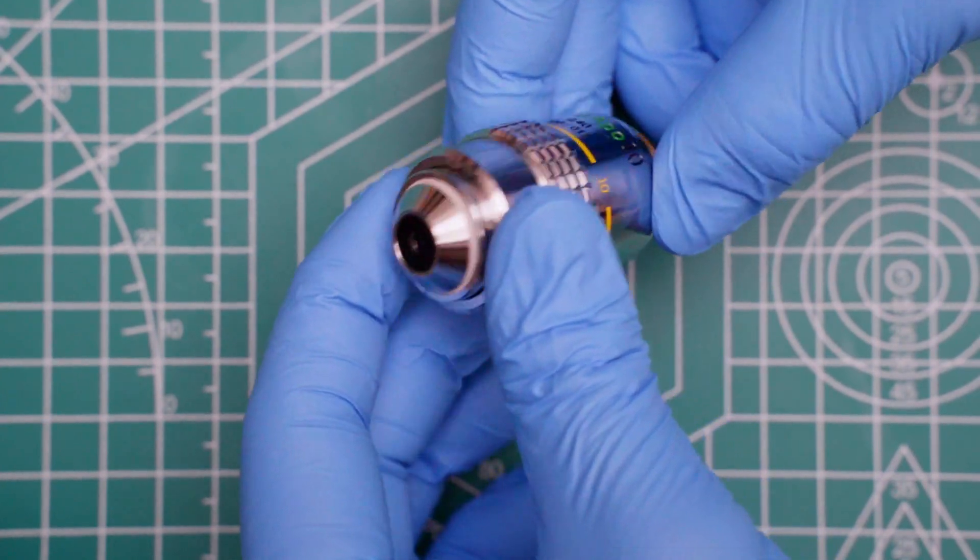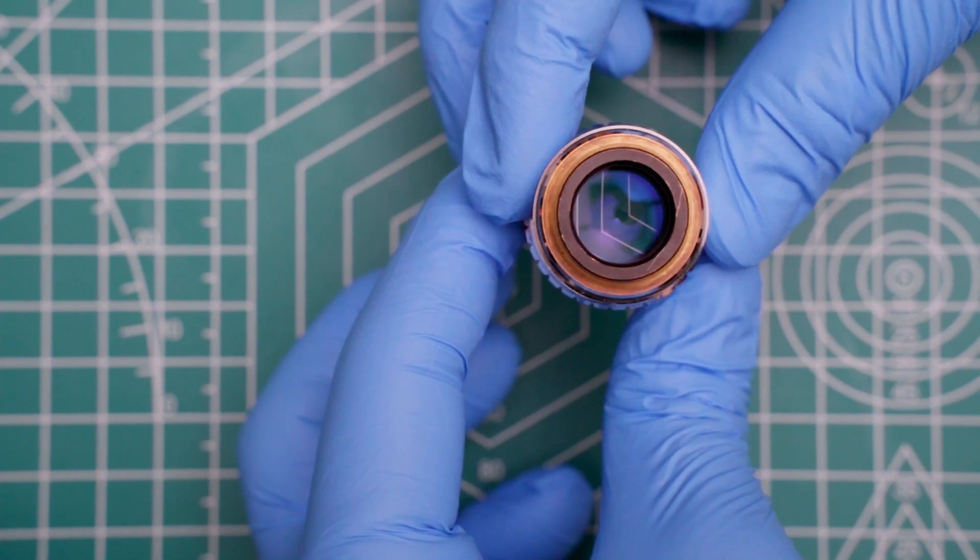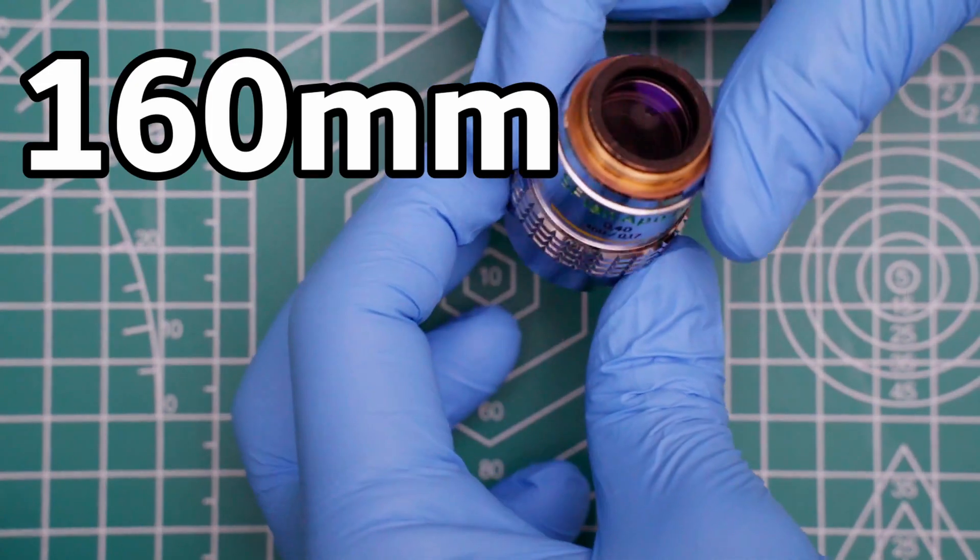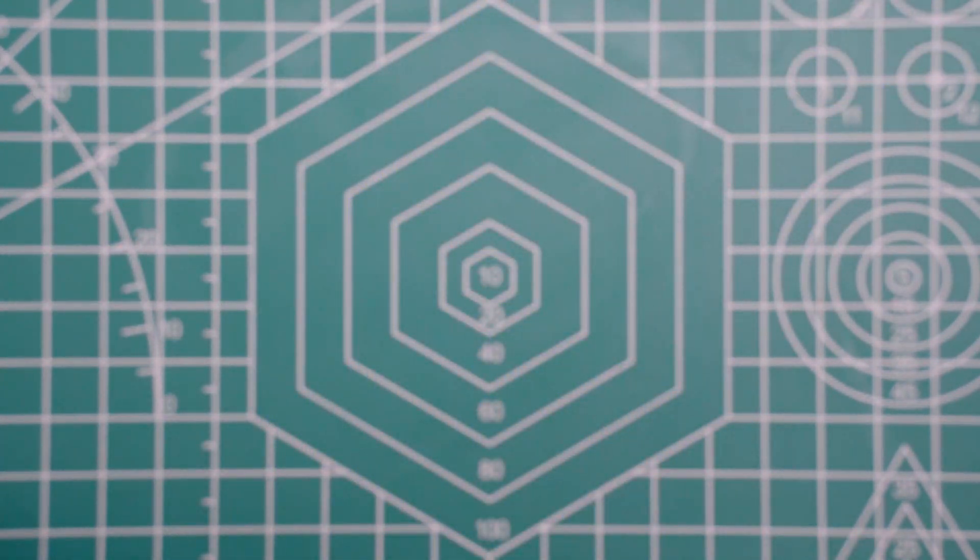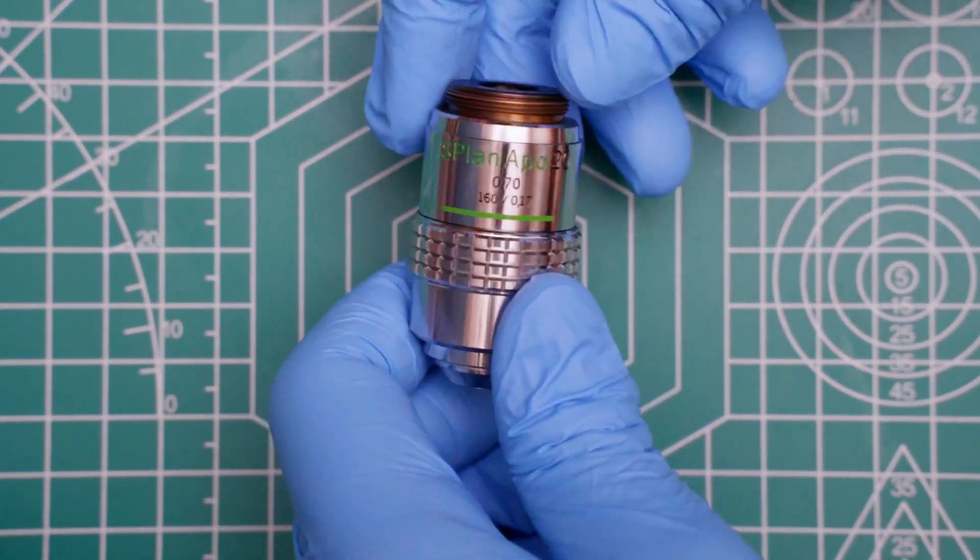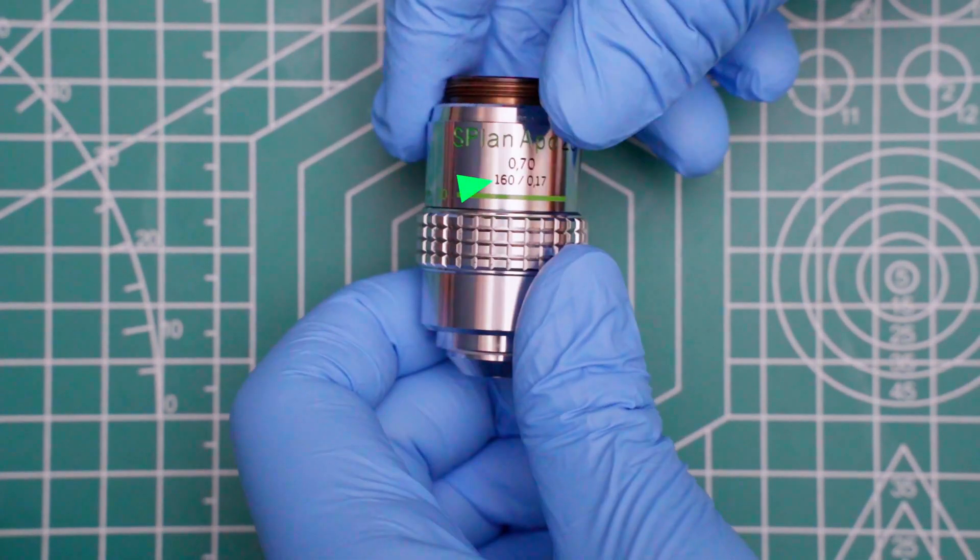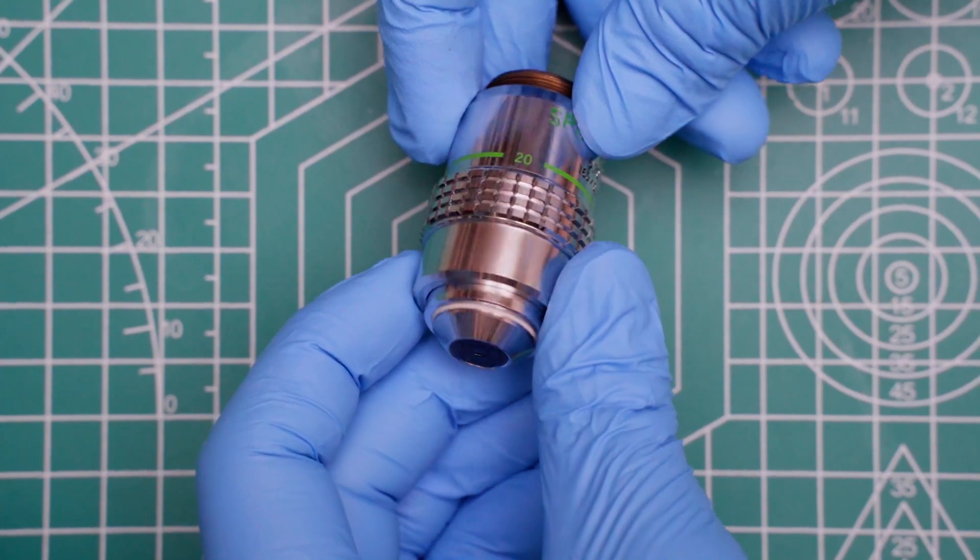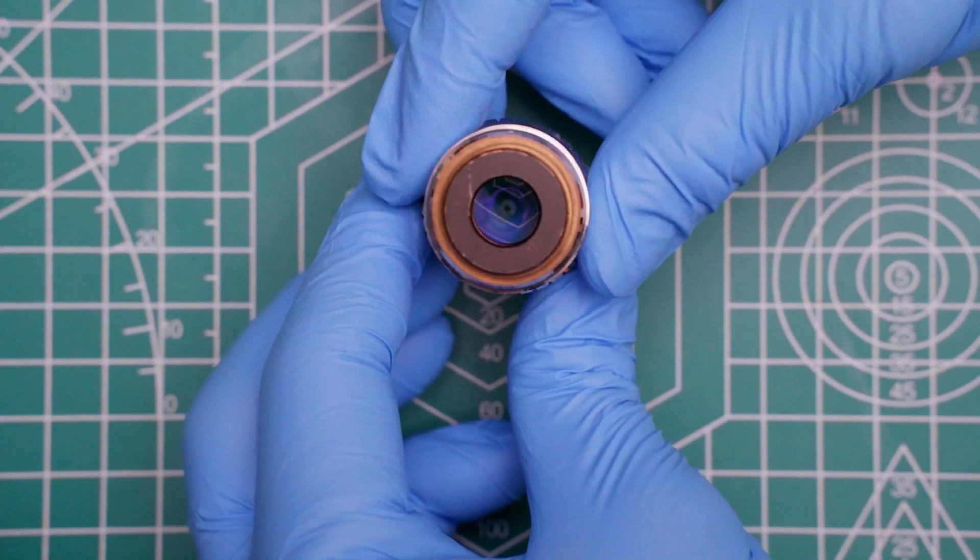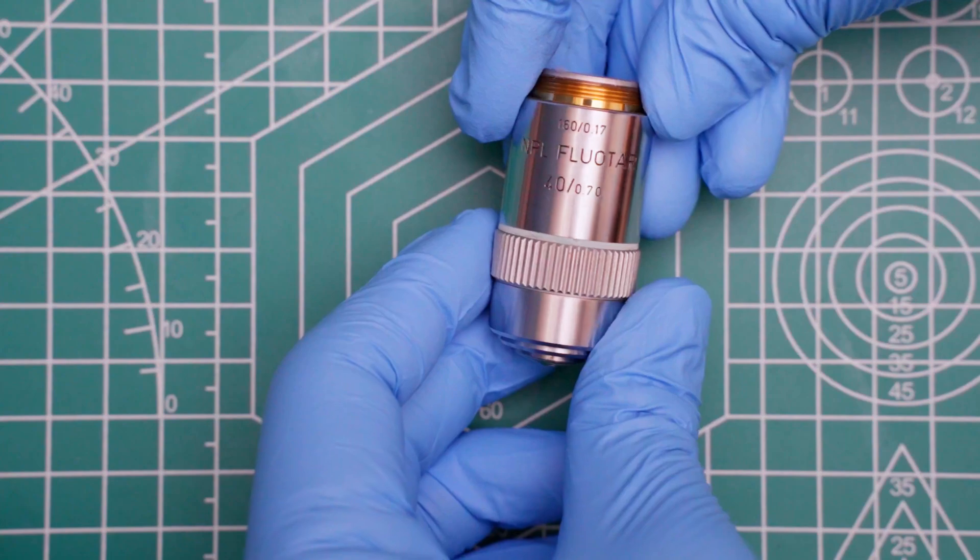Now before we begin, I want to start off by saying there are some assumptions I'm making about your microscope and what you want to do. The main one is that you're using a 160mm tube length microscope and not an infinity-corrected microscope. So if you're not sure, take a look at the objectives on your microscope. If they say 160 somewhere on the side, then you have a 160mm microscope. And if you see an infinity symbol on the side, then you have an infinity-corrected microscope. If you have a mix of both, call a priest. And if you see 170, call a German priest.